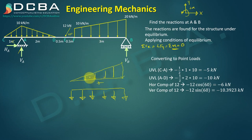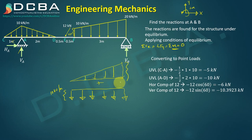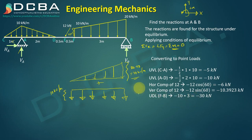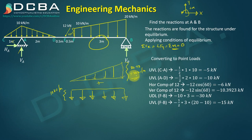The UDL intensity is 10 kN/m, and the additional UVL intensity is 20 minus 10 = 10 kN/m. Converting the UDL from F to B into a point load: minus 10 × 3 = minus 30 kN. Converting the UVL from F to B: minus half × 3 × 10 = minus 15 kN.